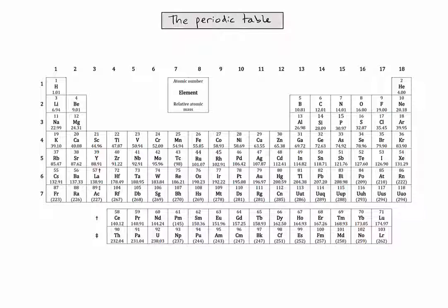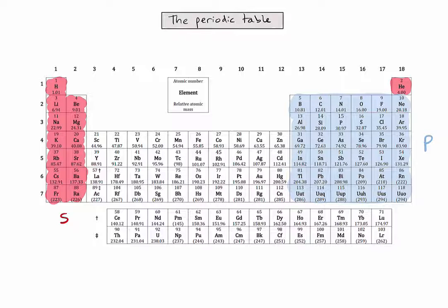The periodic table can also be divided into four blocks. The name of each block tells us about the sublevels where electrons are found in atoms. We have the S block, the P block, the D block, and finally the F block.